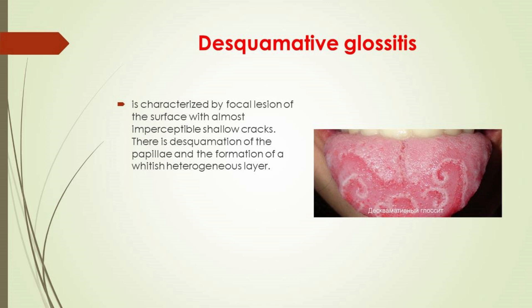Desquamative glossitis is characterized by focal lesions of the surface with almost imperceptible shallow cracks. There is desquamation of the papillae and formation of a whitish heterogeneous layer. Affected areas are quickly restored, acquiring a natural color, while neighboring areas become inflamed. The geometry of the white plaque areas often changes. In advanced cases, due to the large number of cracks, a person feels the tongue is loose.